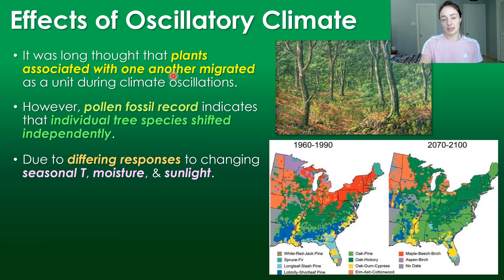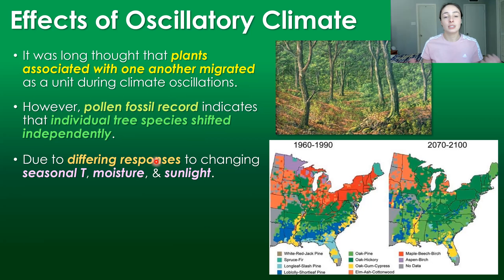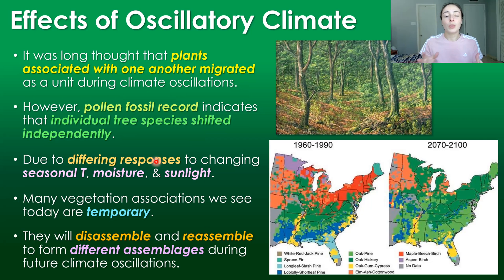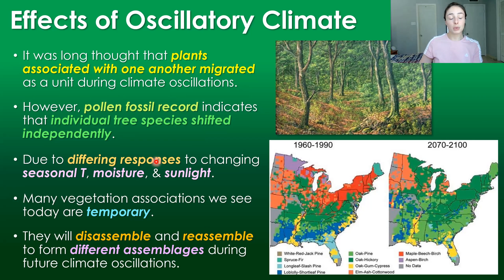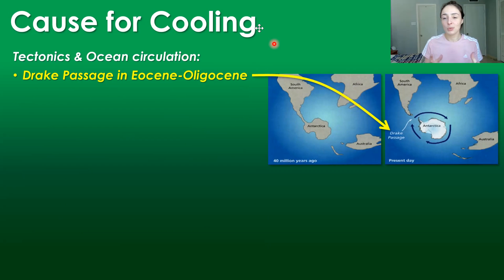It was long thought that plant species associated with one another would migrate kind of as a unit during these climatic oscillations. However, pollen fossil records indicate that individual tree species shift independently depending on their response to changing seasonal temperature, moisture, and sunlight conditions. And so many of the vegetation associations or tree associations that we observe today in the modern environment are actually temporary and will disassemble and reassemble to form new, potentially different assemblages during future climate oscillations.